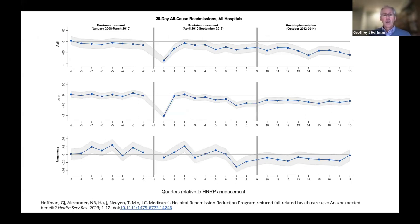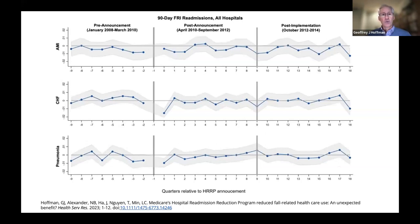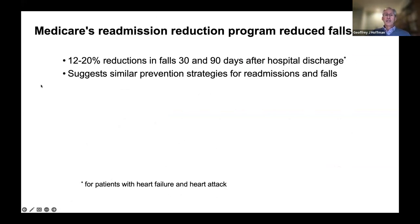We studied a national Medicare policy designed to reduce readmissions that incentivized hospitals to use symptom management, medication management, and encouraging patients to see a primary care physician after a fall. After implementation of the policy, there were large decreases in fall injury rates — 12 to 20% reductions in fall injuries after hospital discharge. This gives us optimism that there are policy-level ways to reduce falls beyond just putting the onus on individuals to improve their physical health.